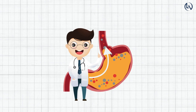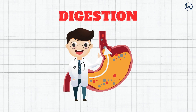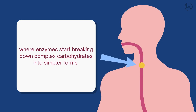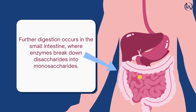Stages of Carbohydrate Metabolism — Digestion: The process begins in the mouth, where enzymes start breaking down complex carbohydrates into simpler forms. Further digestion occurs in the small intestine, where enzymes break down disaccharides into monosaccharides.